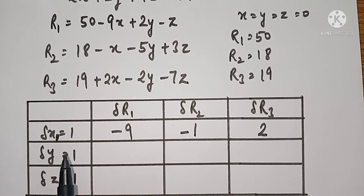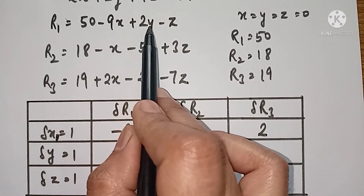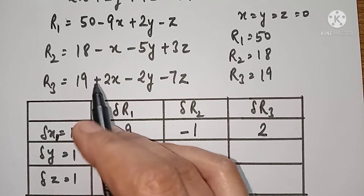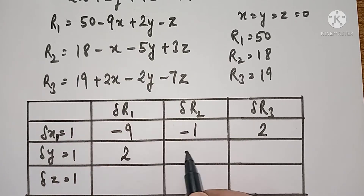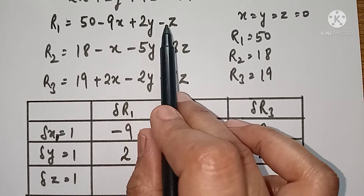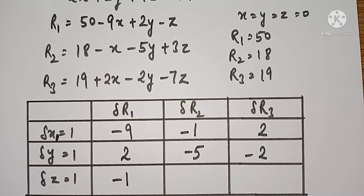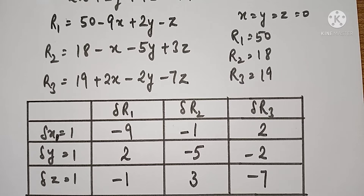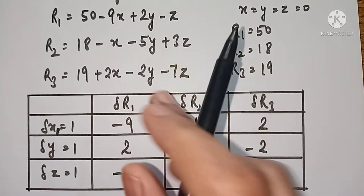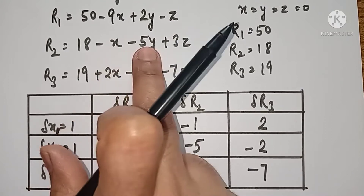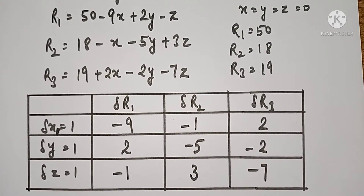y में increment 1 देते हैं, x और z 0 रहेंगे। R1 में 50 plus 2 — that means 2 का increment हुआ; R2 में 18 minus 5, so minus 5; R3 में 19 minus 2, change minus 2। इसके shortcut की बात करें: x, y, z की coefficient matrix का transpose यहाँ operation table में आता है — minus 9, 2, minus 1 / minus 1, minus 5, 3 / 2, minus 2, minus 7। अब इसके बाद हमें बनानी है relaxation table।